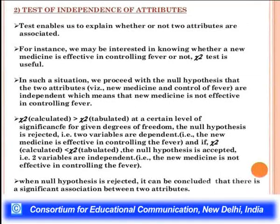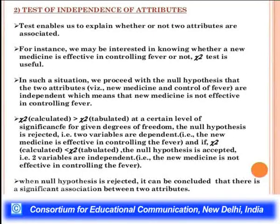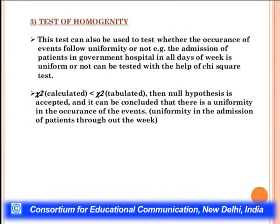Test of independence of attributes: enables us to understand whether two attributes are associated. Example: whether a new medicine is effective in controlling fever. Null hypothesis: new medicine and fever control are independent — medicine is not effective. If χ²(calculated) > χ²(tabulated) at a given level of significance, null hypothesis is rejected — the two variables are dependent, meaning the new medicine is effective. If χ²(calculated) ≤ χ²(tabulated), null hypothesis is accepted — the medicine is not effective. When null hypothesis is rejected, there is a significant association between the two variables.